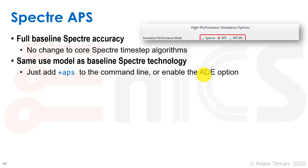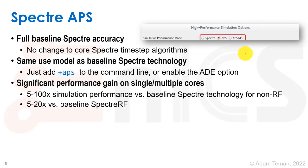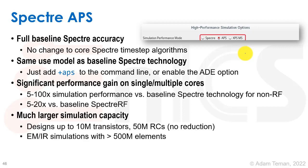APS uses the same use model as the baseline Spectre technology, so we just add +APS to the Spectre command line. Or if we go into the high-performance simulation options form, we choose APS as our simulator. They claim 5 to 100X simulation performance versus baseline Spectre for non-RF circuits, and 5 to 20X for baseline Spectre RF simulation.